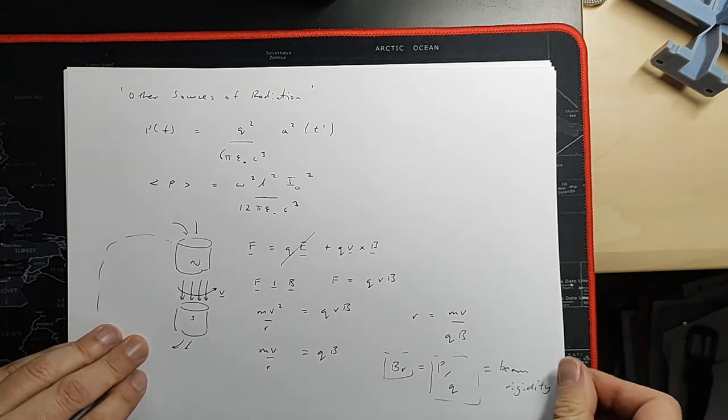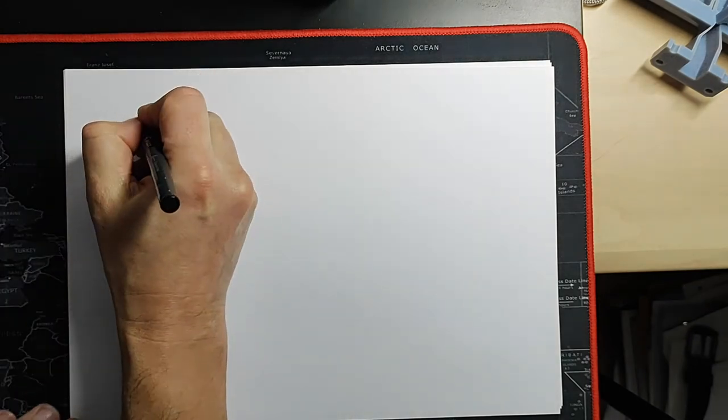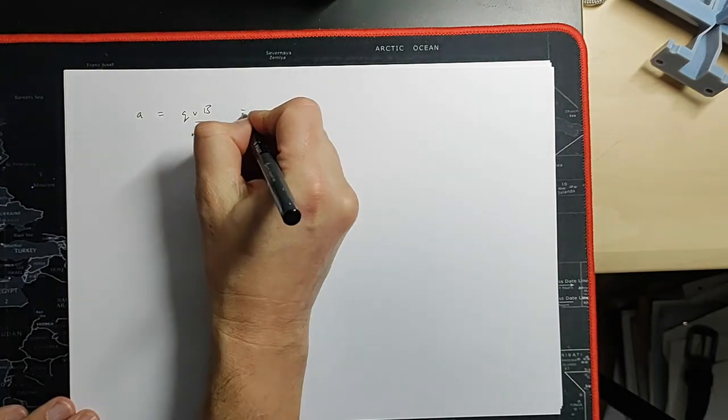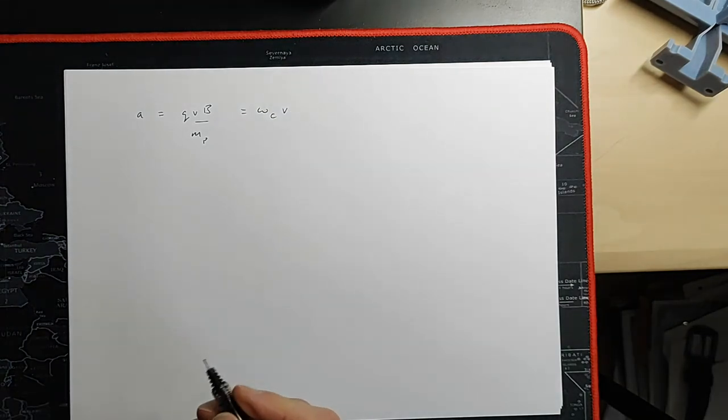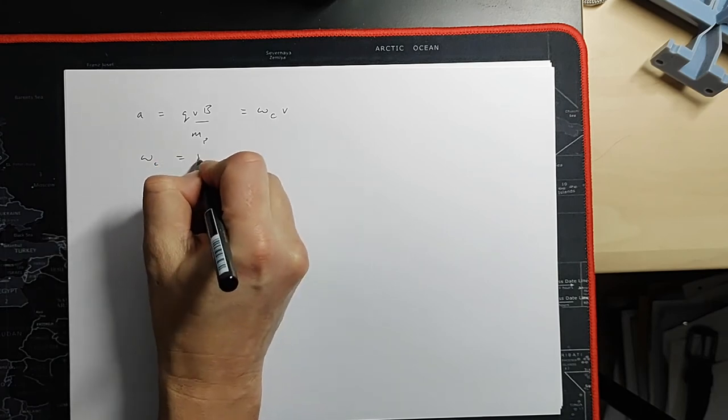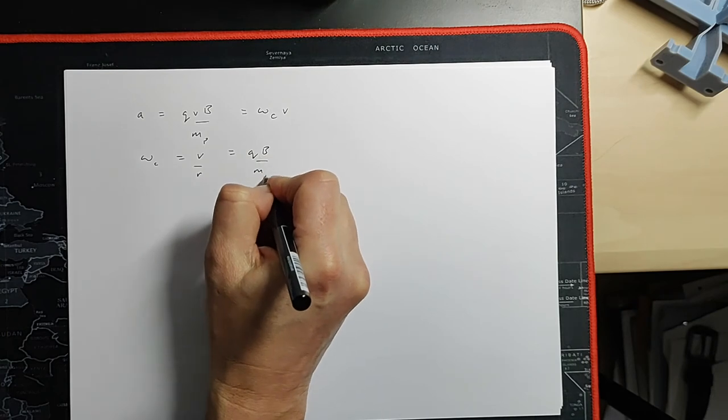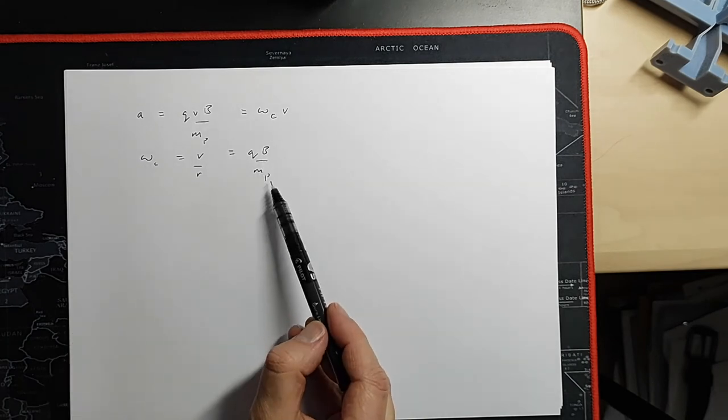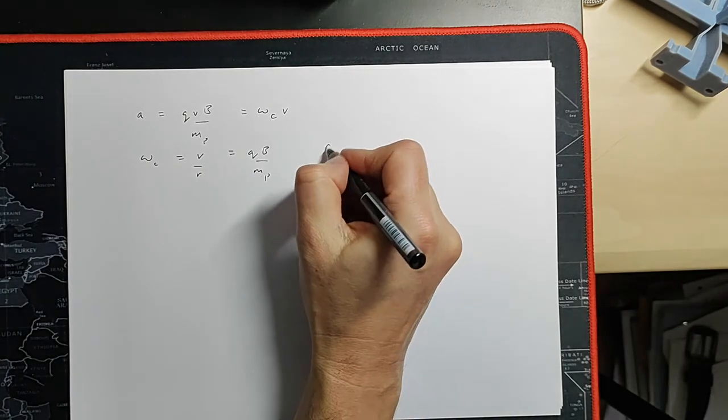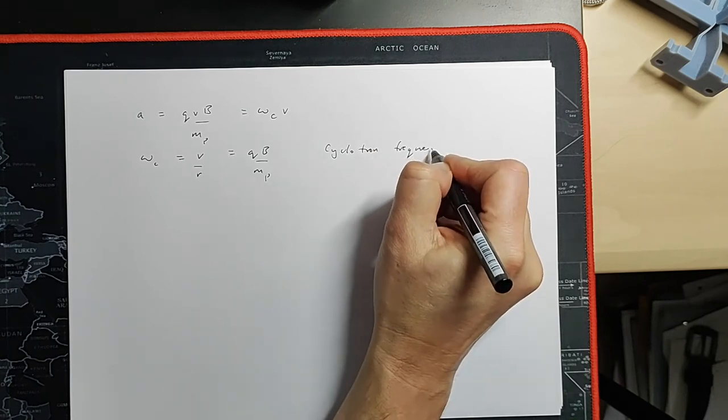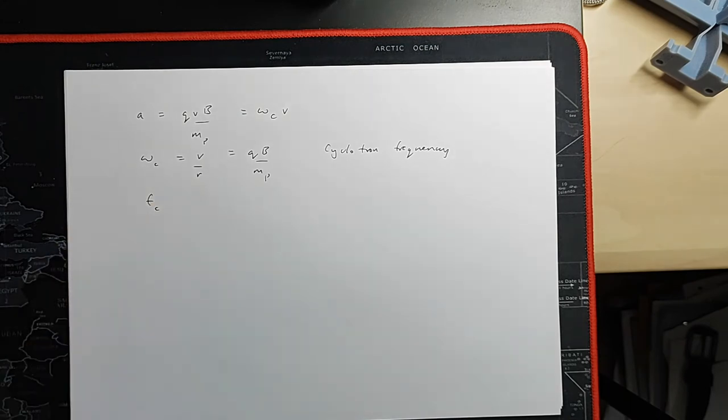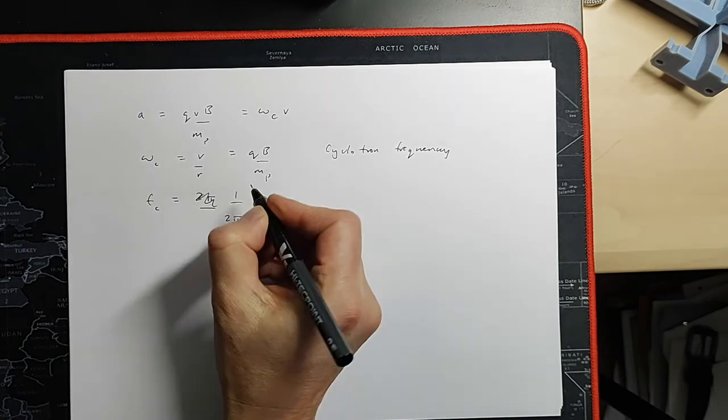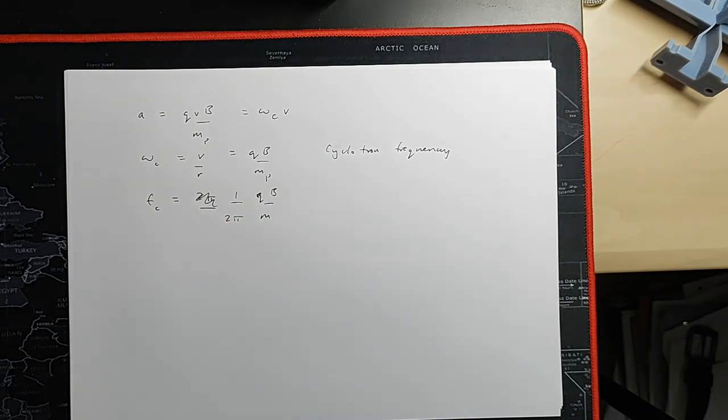Now, there's something else we can do. We can think about that constant acceleration, A, is equal to QVB over m, here the mass of the proton. And that can be written as omega C times v, where the frequency of motion, omega C, is equal to V over r equals QB over mP. And what we see here is that the rotational frequency, the rate at which the protons are circulating in the magnetic field, is independent of the velocity. So, this is the cyclotron frequency. Now, the cyclotron frequency can be written in one of two ways, and you need to spot which way that you're using. It can also be written in terms of the number of revolutions that the proton makes per unit time in a magnetic field is equal to QB over m divided by 2 pi.